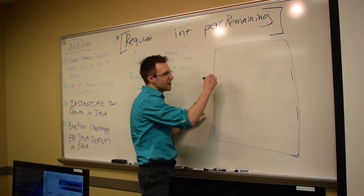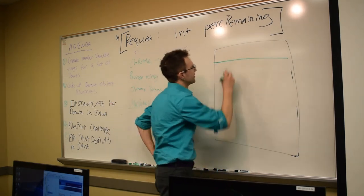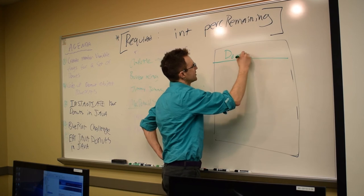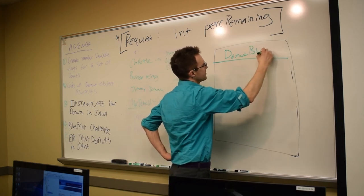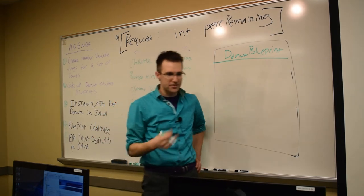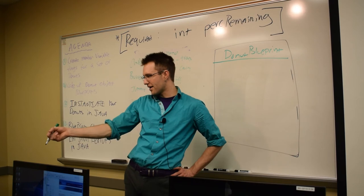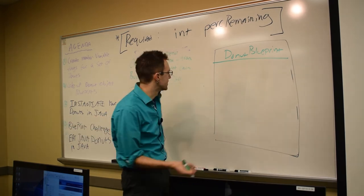So what we're going to design is we're going to write one class and guess what that class is going to be called? Donut. Donut. Donut. Blueprint. Donut. And in that donut blueprint you're going to design and add the attributes that you have marked in your physical donuts.